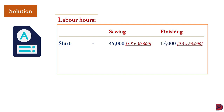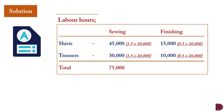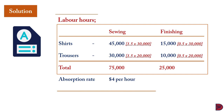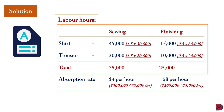For trousers in sewing: 1.5 hours × 20,000 units = 30,000 hours; in finishing: 0.5 hours × 20,000 = 10,000 hours. Total labor hours: sewing = 75,000 hours; finishing = 25,000 hours; combined = 100,000 hours. The absorption rate for sewing is $300,000 ÷ 75,000 = $4 per hour, and for finishing is $200,000 ÷ 25,000 = $8 per hour. This explains how we arrived at both absorption rates used in the solution.